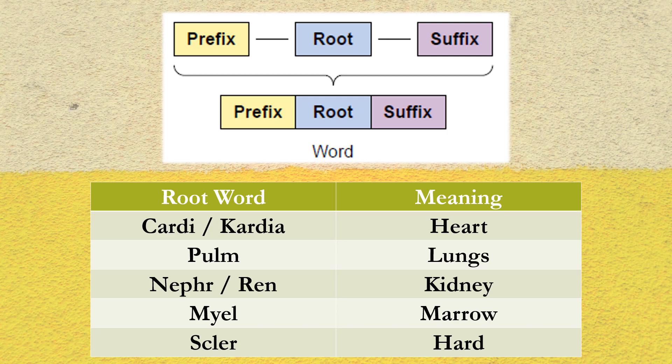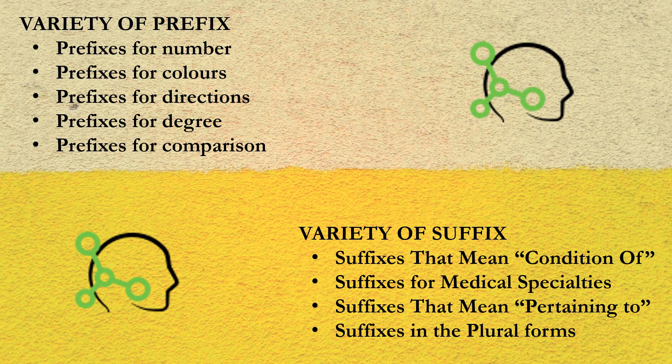For example, look at the table at the bottom of the slide — you have the root word and the meaning of it. So anywhere you use 'cardi' or 'cardia' it will always mean heart. 'Pulm' stands for pulmonology or study of the lungs. 'Neph' or 'renal' means kidneys, 'myel' means marrow, and 'sclera' means hard — for example, the sclera of the eye is the white, hard portion, derived from the root word 'scler'.